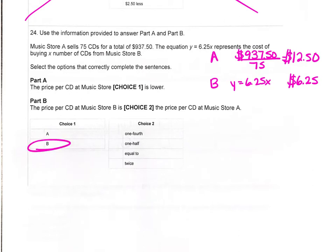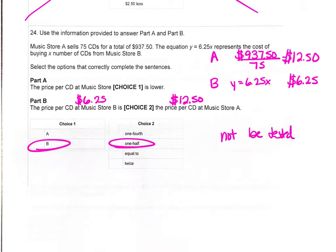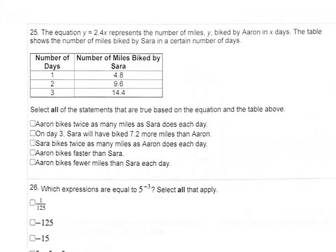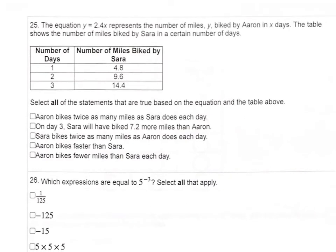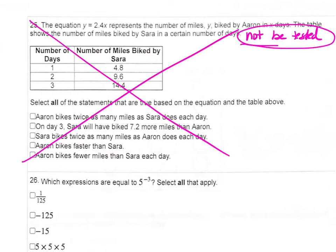The price per CD at music store B is half the price of music store A — $6.25 is half of $12.50. Problems 24B and 25 will not be tested this week.